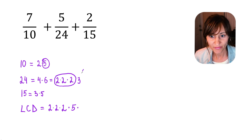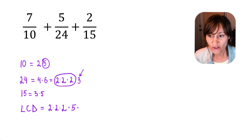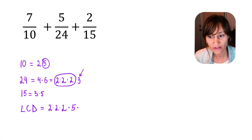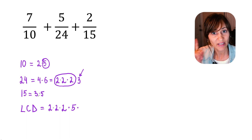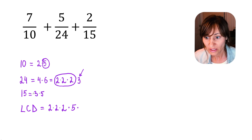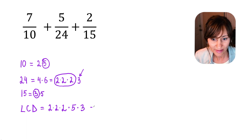The next number is 3 — don't forget it. 3 shows up in 10 zero times. 3 shows up in 24 one time. In 15, 3 also shows up one time. So the most number of times 3 shows up in any number is one time. We can either circle 3 in 24 or in 15 — it doesn't matter. So the LCD will have 3 one time.